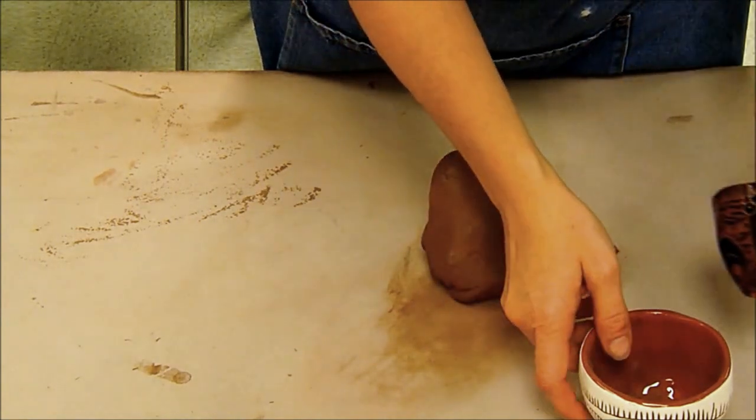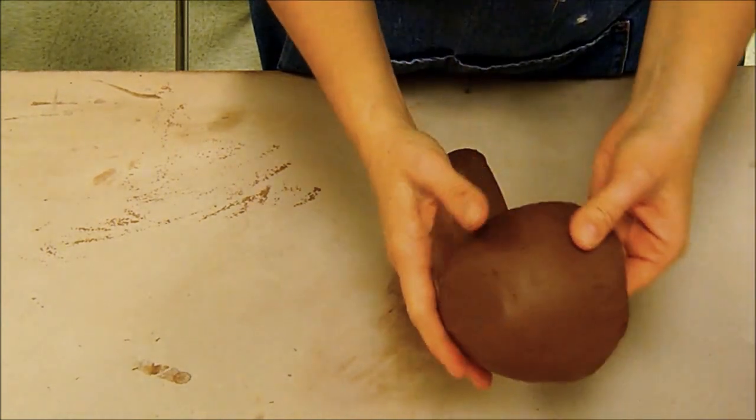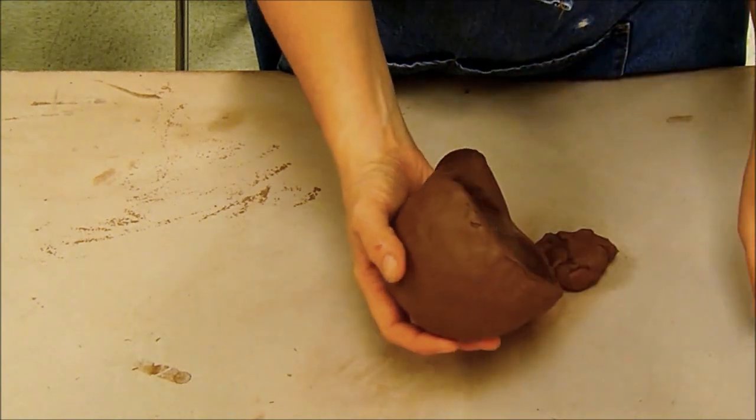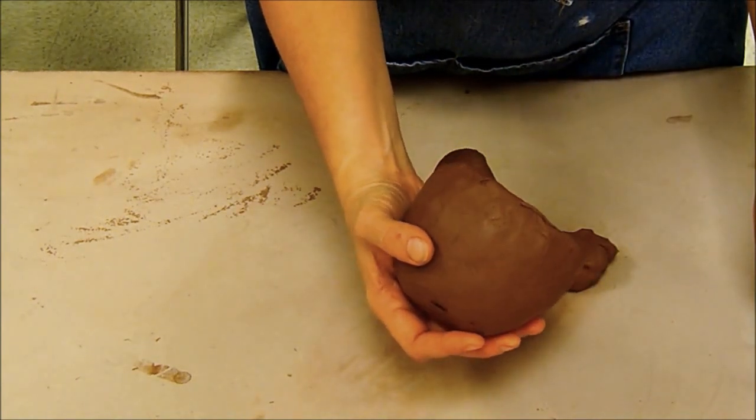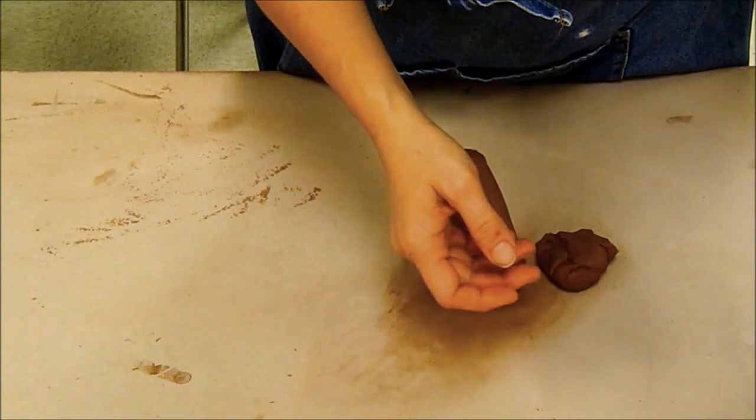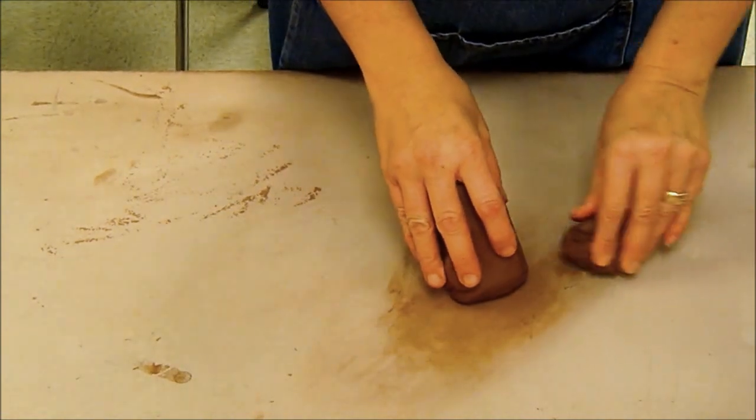We're going to be using earthenware clay and we're going to be doing a sgraffito technique and also a majolica technique. We're going to be making two cups and glazing them differently.